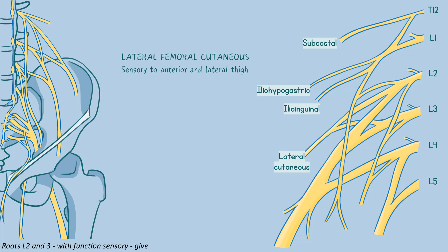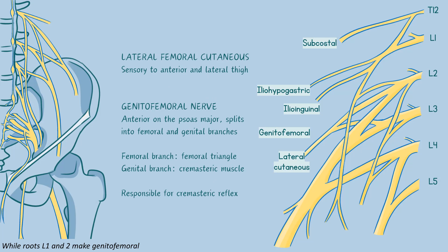Root L2 and L3 function to give lateral cutaneous innervation to the thigh. Root L1 and L2 make the genitofemoral nerve, which travels down the pelvis with psoas major right behind.